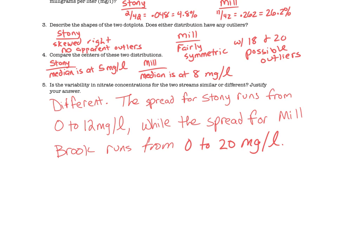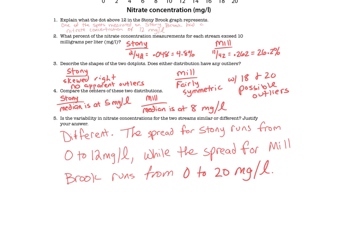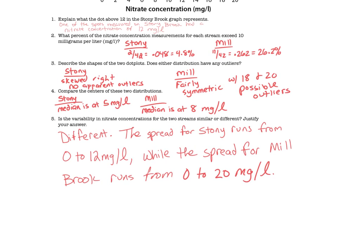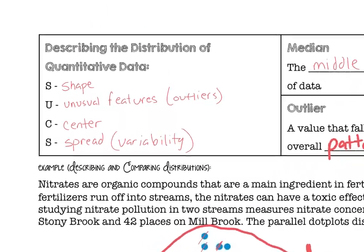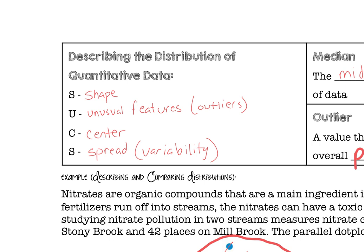When we're looking at how to display and describe quantitative data, remember we use a dot plot, and each dot represents a value that was sampled. We want to make sure that when we're describing the distribution of these quantitative data, we use the acronym SUCKS, which is for shape, unusual features which are our outliers, the center which is described by the median, and then finally the spread, what is the variability, what's the lowest value we have, and what is the highest value that we have.